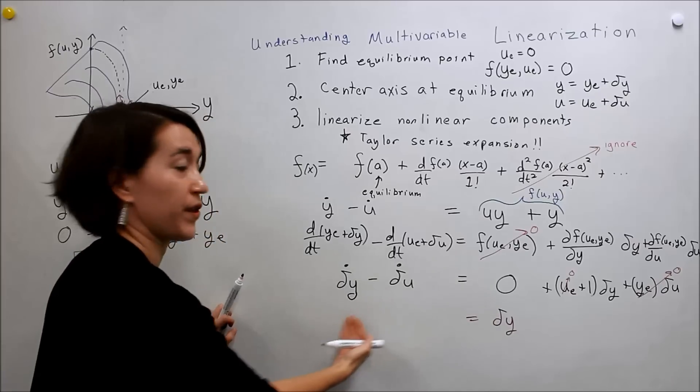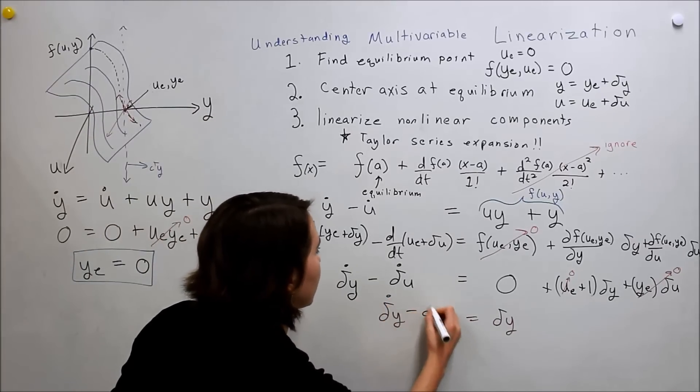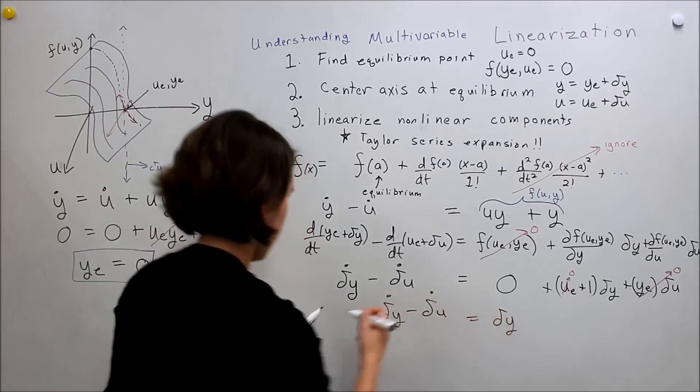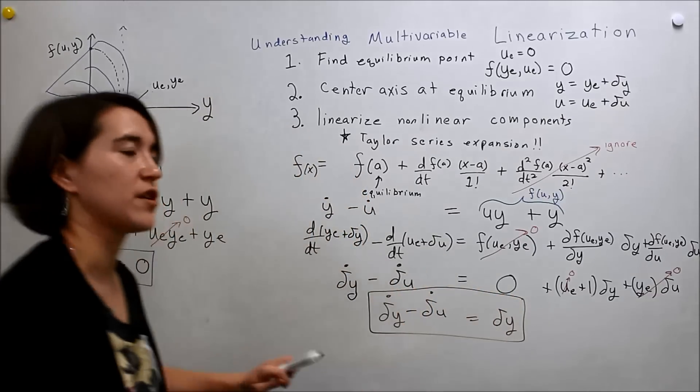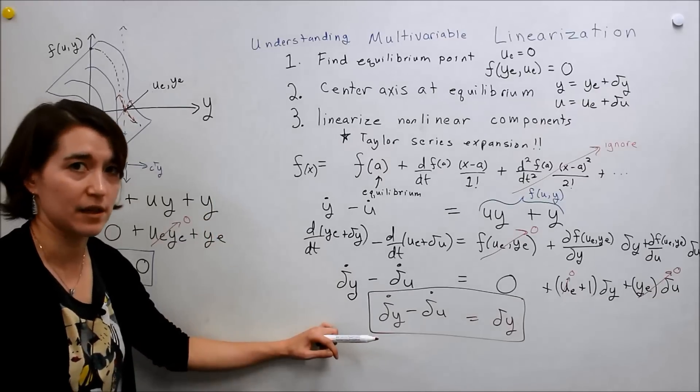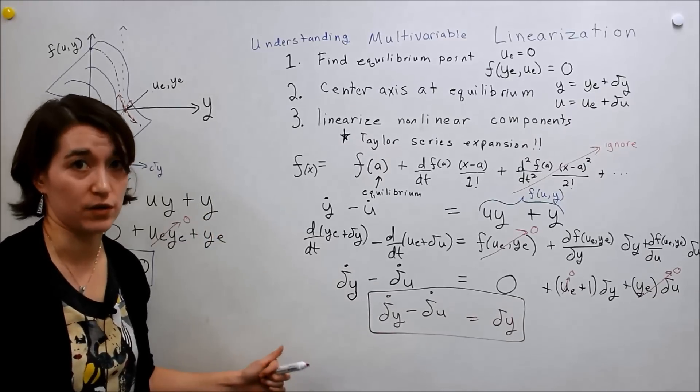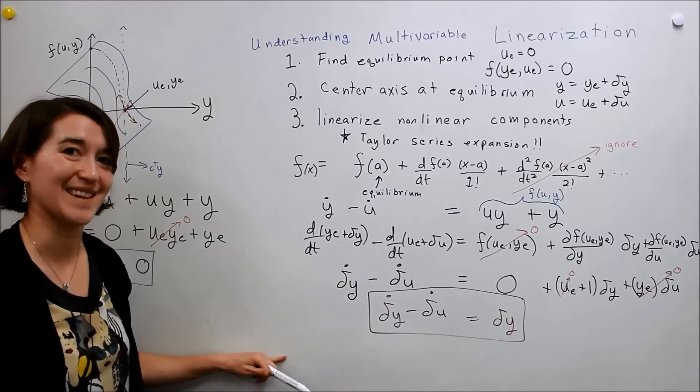And that will be equal to this side of the equation. So, delta y dot minus delta u dot. And that would be our linearized expression for this function. Again, for a system, you could now take the Laplace transform and solve for the transfer function. But I think you all know how to do that. So, I'll leave it at this.